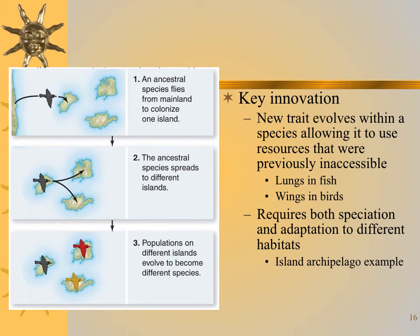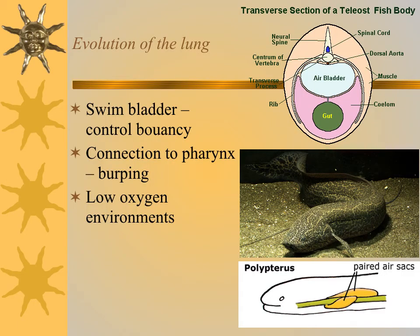Adaptive radiation also happens following some key adaptation or innovation where a new trait develops in a species and allows them to exploit habitats differently from any other organisms. For example, organisms that developed lungs — paired air sacs that came off the throat. In some species, these paired air sacs developed into a swim bladder, but in others, they could take in oxygen and exploit new habitats. Lungfishes are found in many, many places as a result.